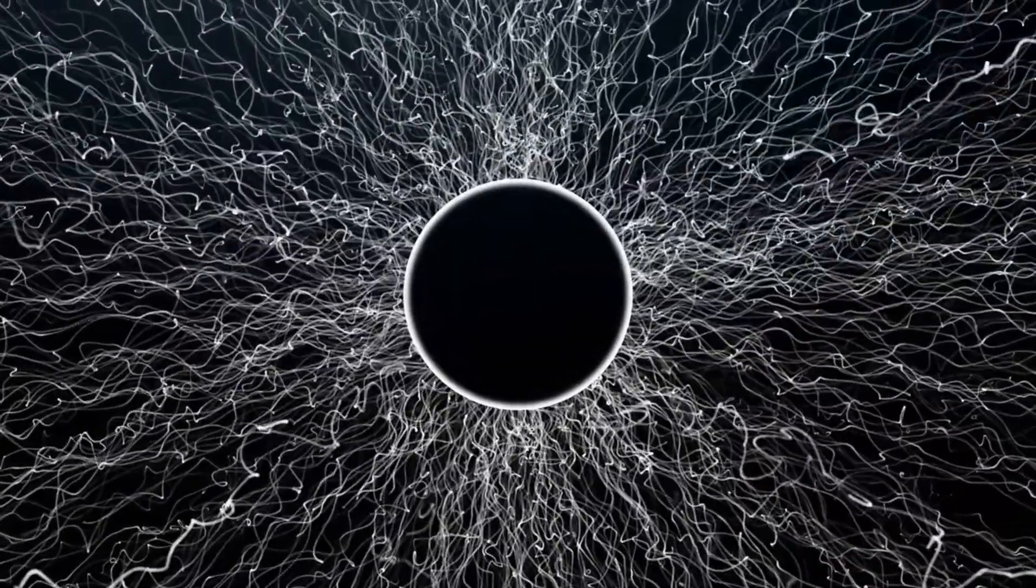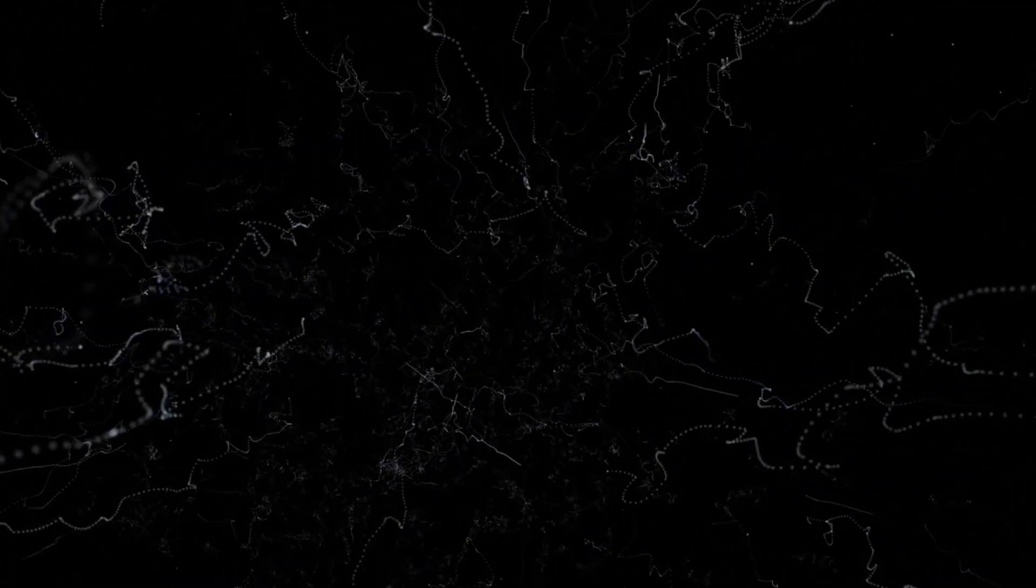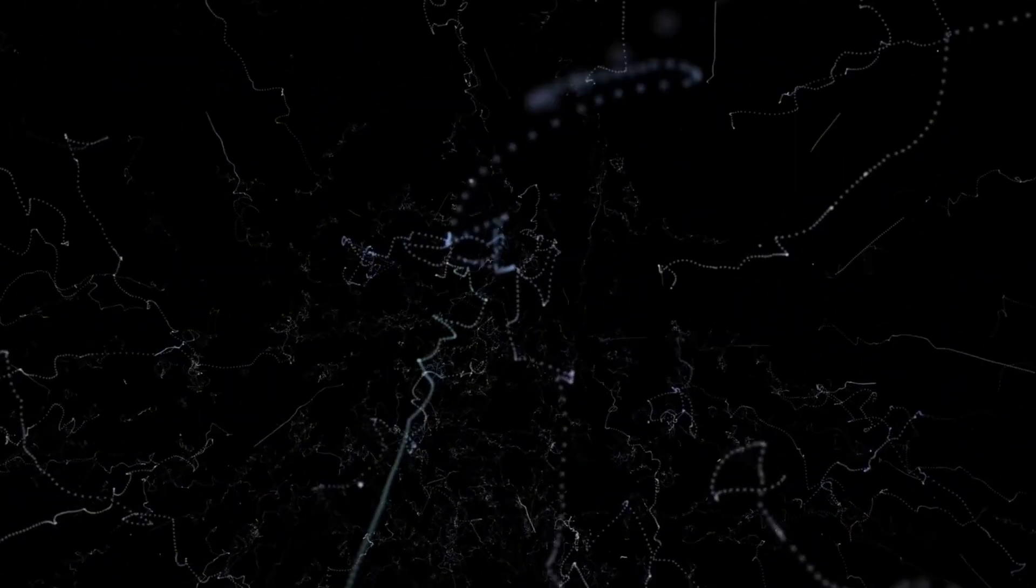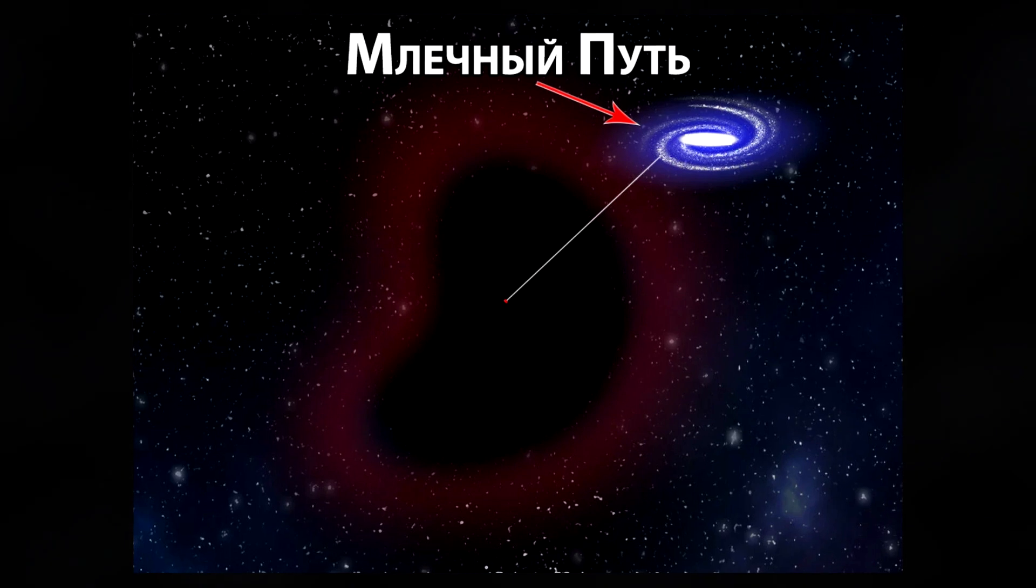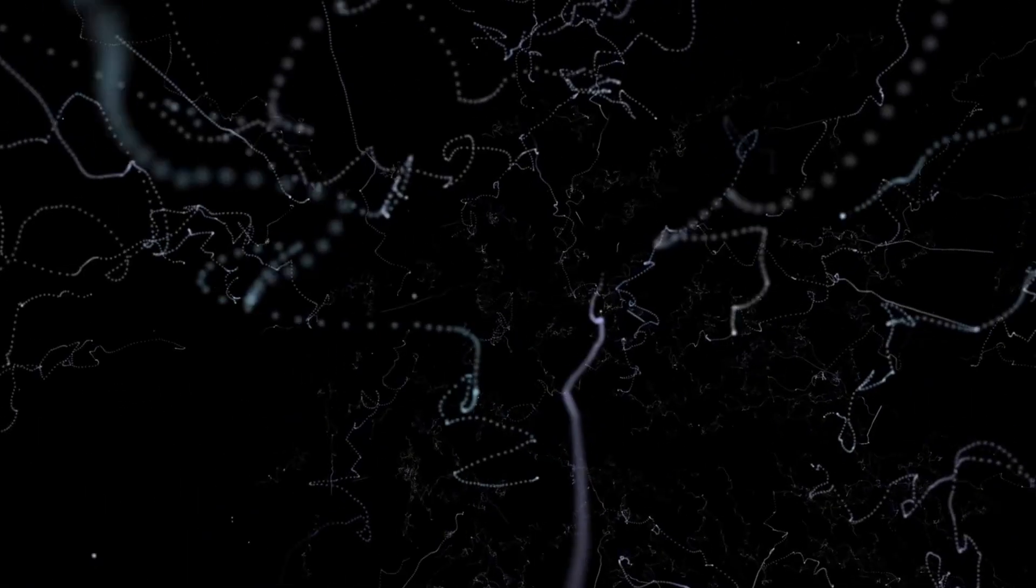Nothing. The areas of the universe where there is only nothing are the voids. The largest of these is the Boötes void. It is located in the vicinity of the constellation Boötes and is about 250 million light-years in diameter. The distance to Earth is approximately 1 billion light-years.